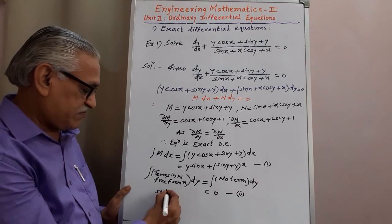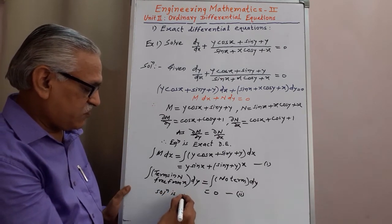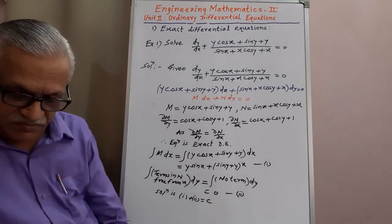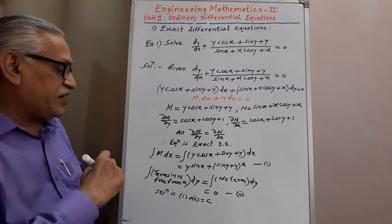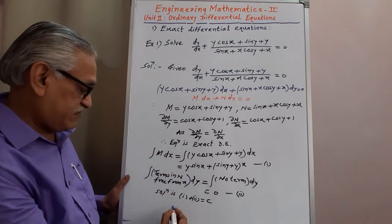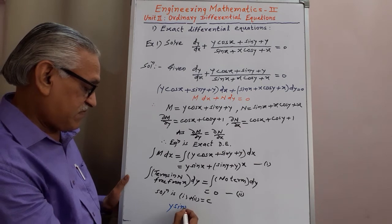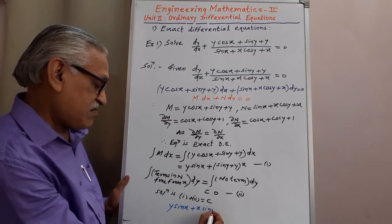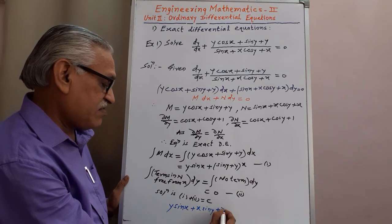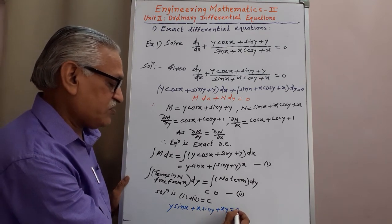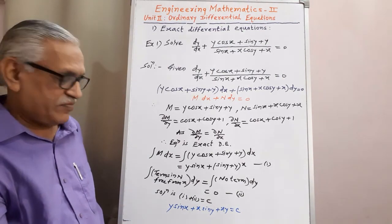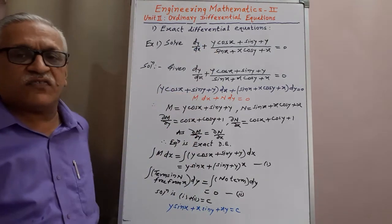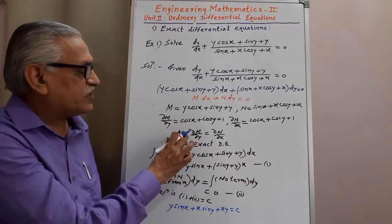The solution is equation 1 plus equation 2, equated to constant c. Therefore: y sin x + x sin y + xy = c is the required solution. We can verify this by taking its total derivative — if we recover the original differential equation, it confirms exactness, which we already checked using the condition.